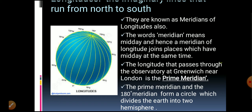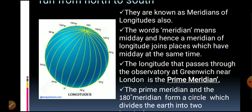Longitudes are known as meridians of longitude. The word 'meridian' means midday. Each meridian of longitude joins places that have midday at the same time — so each longitude connects all those places which experience midday simultaneously.